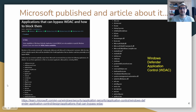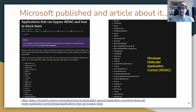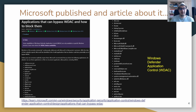Microsoft has already published an article about living off the land binaries, covering applications that can bypass Windows Defender and how to block them. There are many files and executables mentioned, like cscript.exe, bash.exe, and msbuild.exe — all of them can bypass Windows Defender.